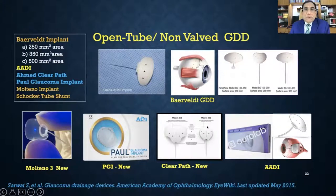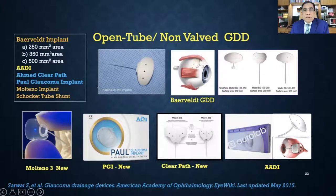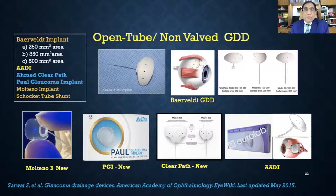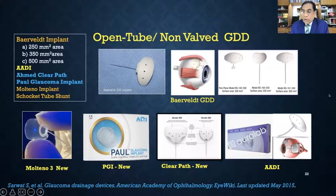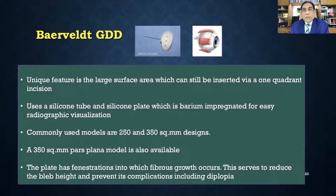For non-valved devices, the Baerveldt, AADI (Aurolab Aqueous Drainage Implant), and Ahmed ClearPath are commonly used. In Bangladesh, Baerveldt is not easily available, but the AADI (from AuroLab, India) is cost-effective for patients. We also have some experience with the Paul Glaucoma Implant from Singapore. We mostly use the AADI in our country.